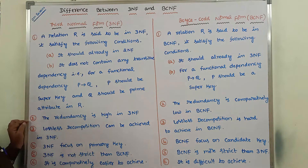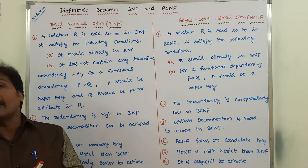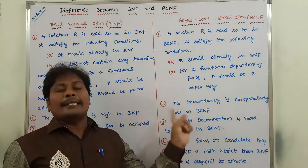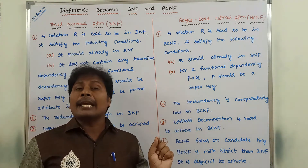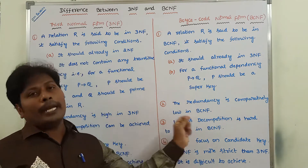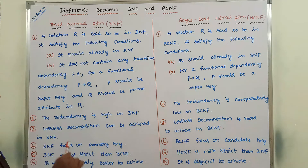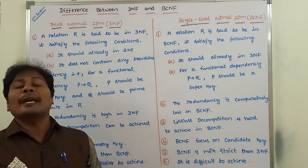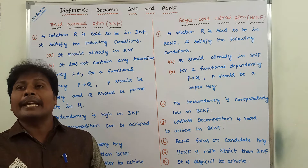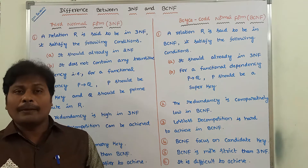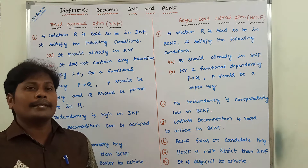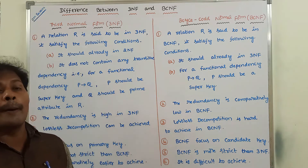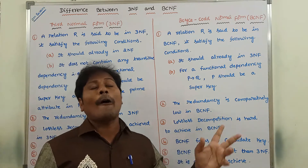The second point: redundancy is high in 3NF, whereas in the case of BCNF, redundancy is comparatively low. Redundancy means the same information is replicated at more than one place. Redundancy is very high in third normal form whereas in BCNF, the redundancy is comparatively low.